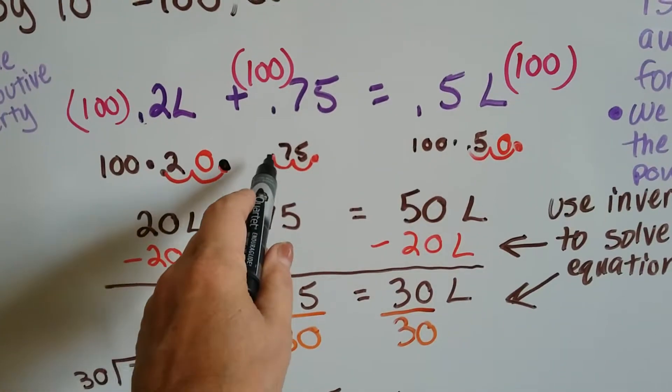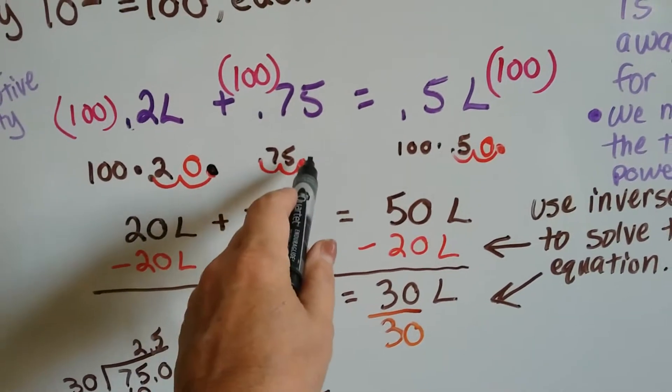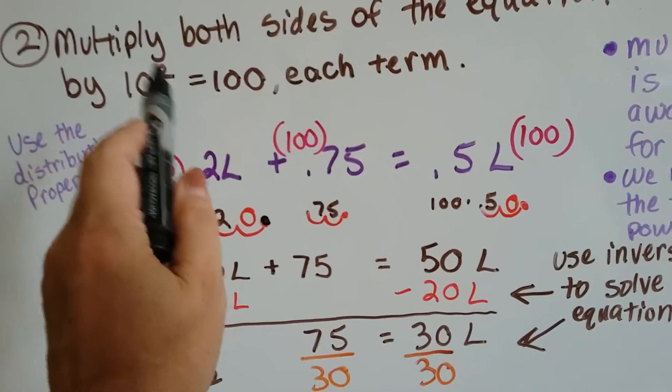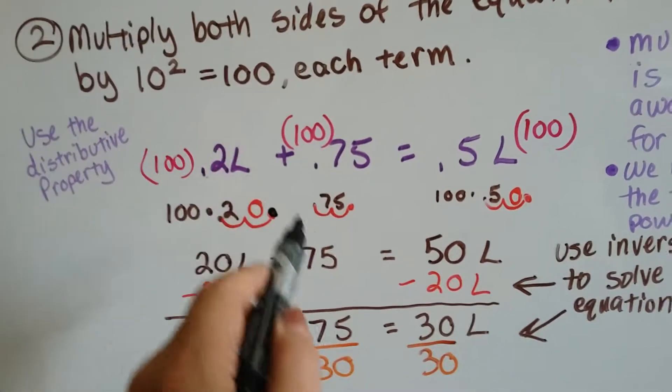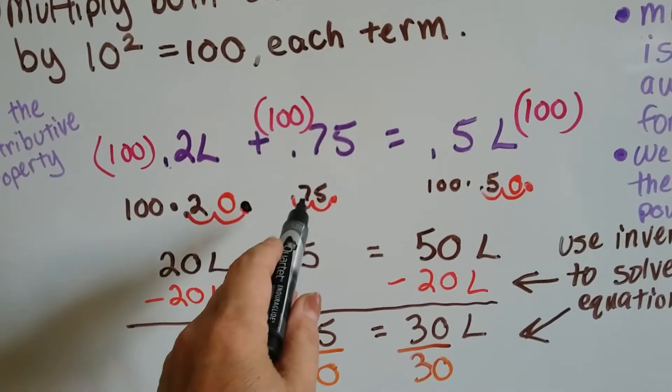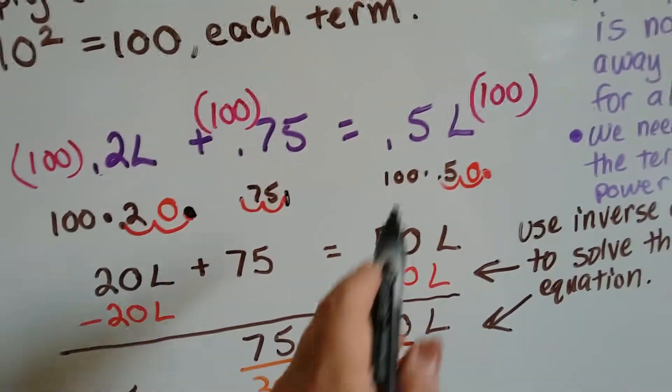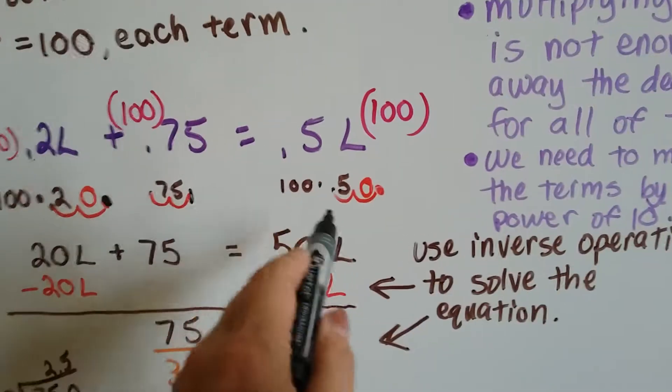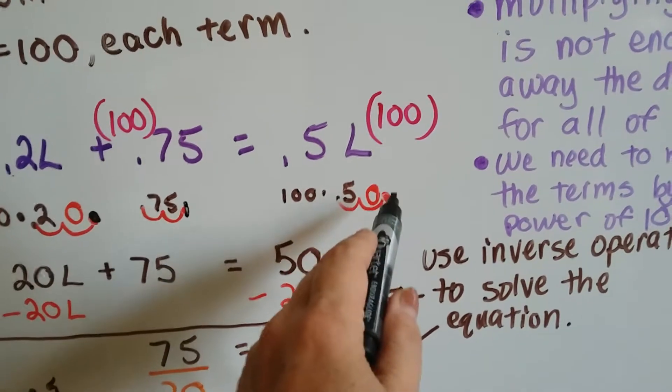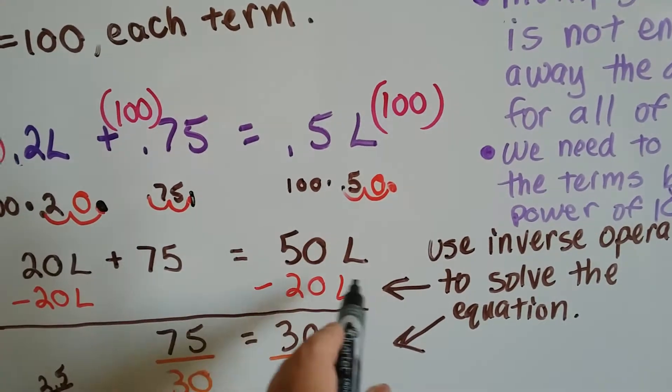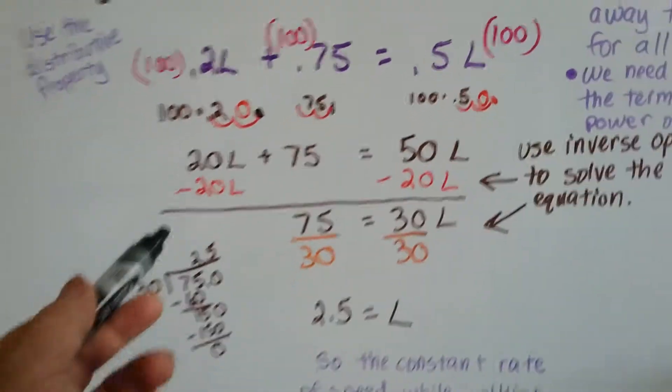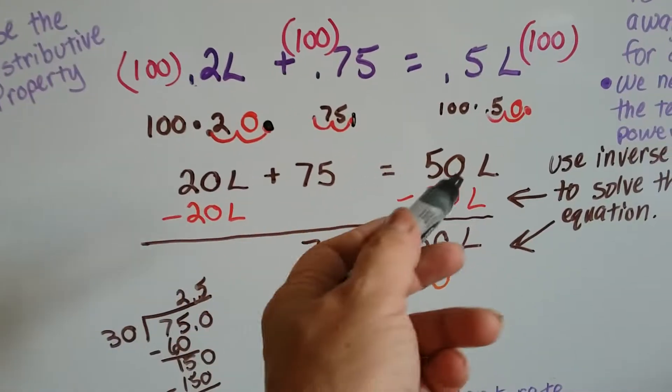The .75 gets two hops. The decimal point was here, and we go 1, 2. For every two exponent, that's how many hops we're going to do. So now the decimal point's back here, and we've got a 75 as a whole number. The .5 is going to make two hops, 1, 2, and now the decimal point's there, and we've got a 50. So now our equation says 20L plus 75 equals 50L.